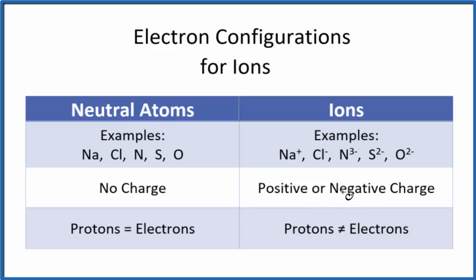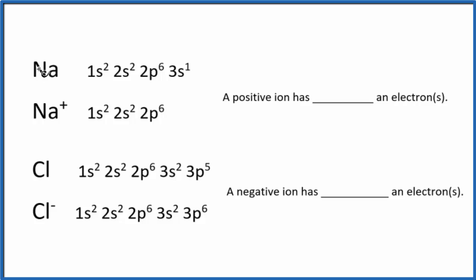So let's try this. I have the electron configuration for neutral sodium and then the sodium cation. I also have neutral chlorine and then the chloride anion. Pause, look at the patterns, and then fill in the blank here for each of these.